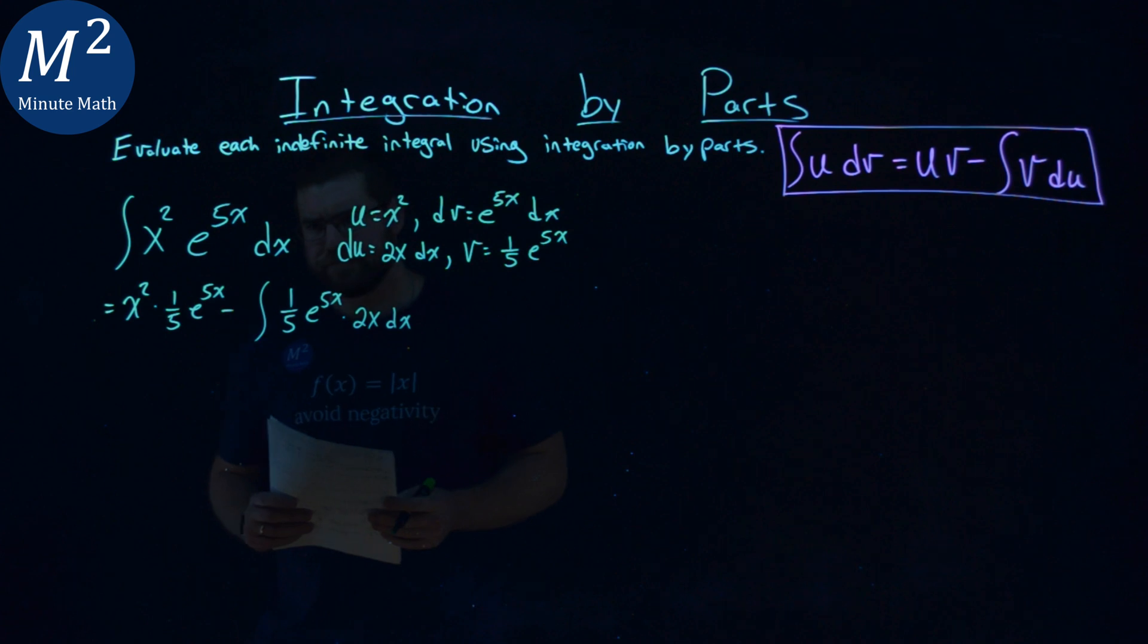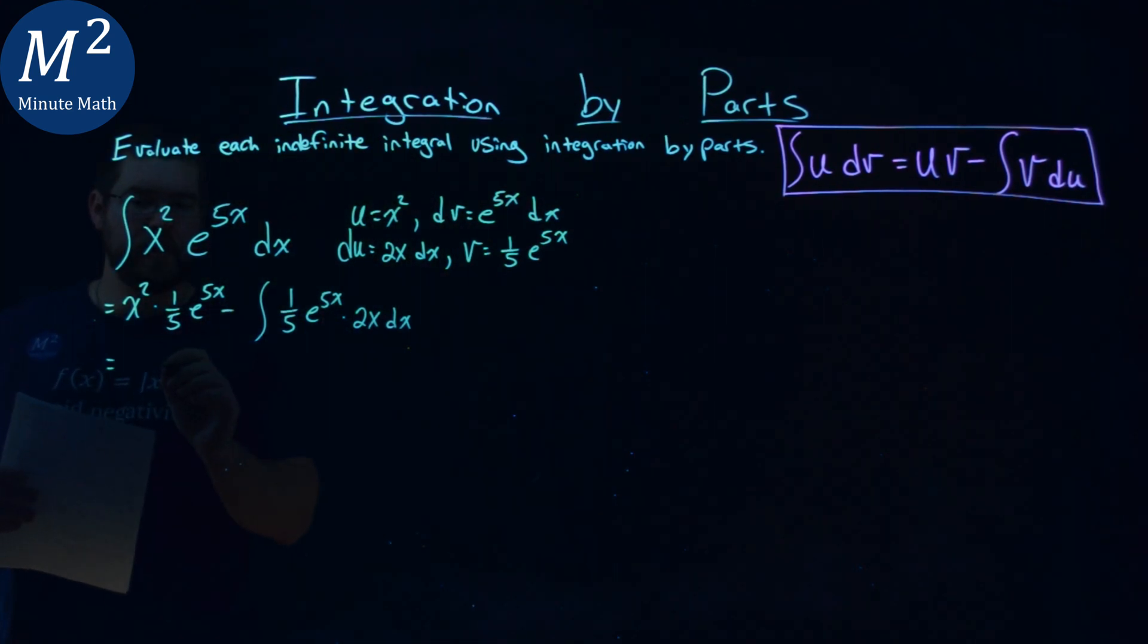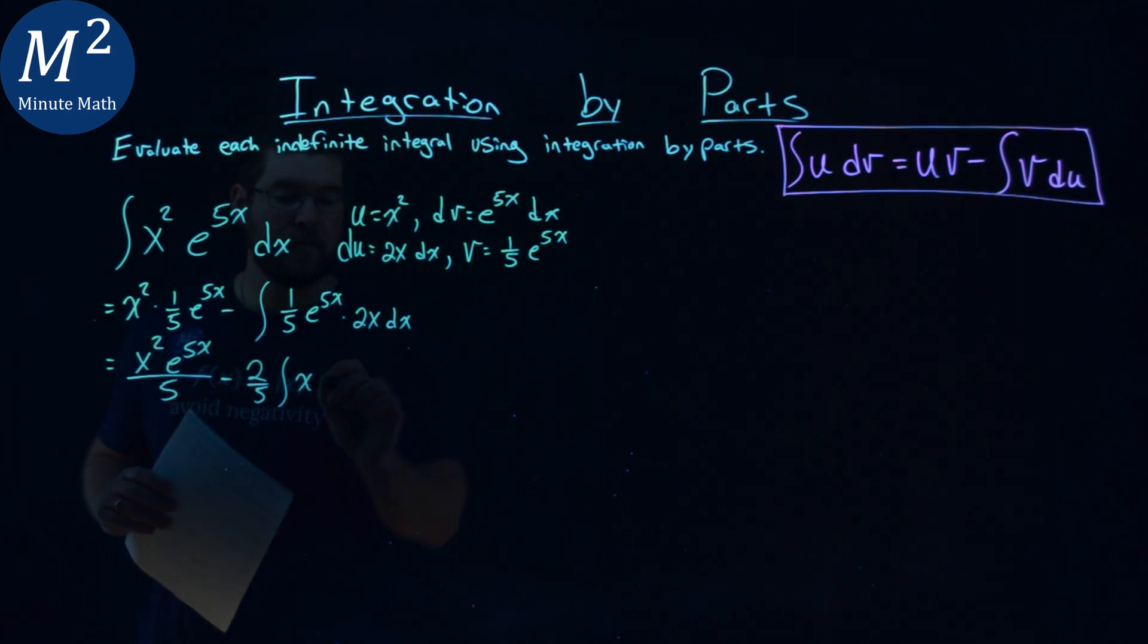Let's simplify this where we can and combine into one fraction. We have x squared times e to the 5x power over 5, minus - let's pull out what we can. We have one-fifth and a 2, so it's minus two-fifths on the outside, times the integral of x e to the 5x dx.